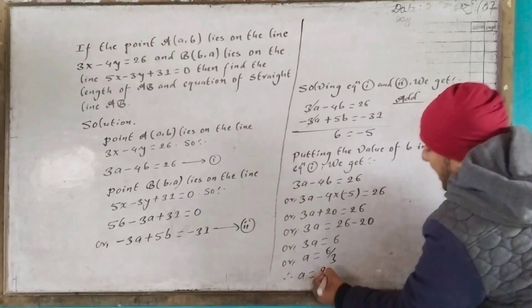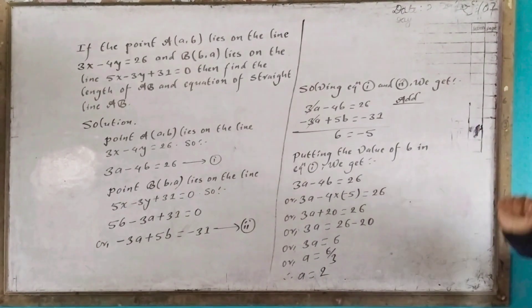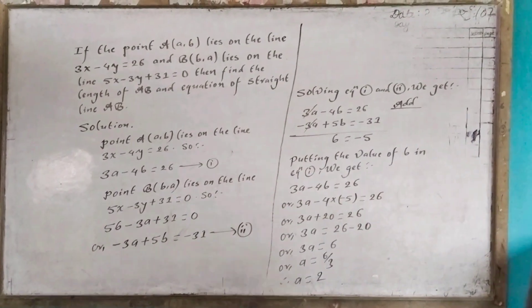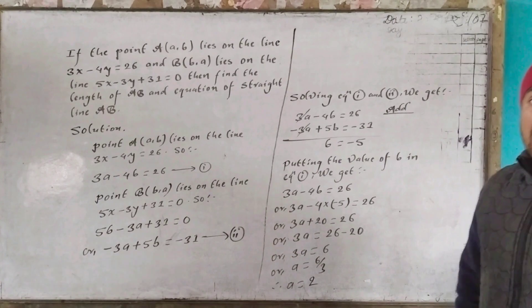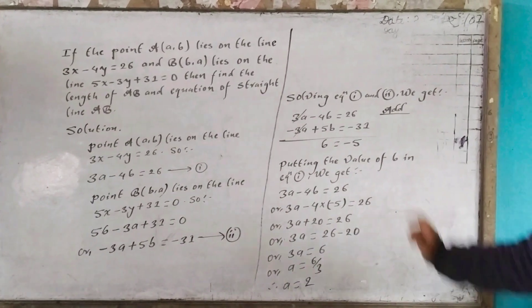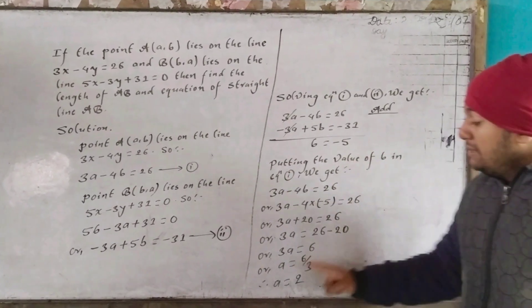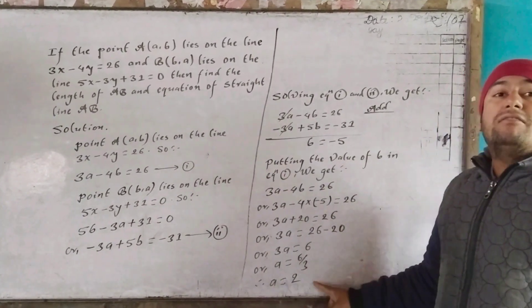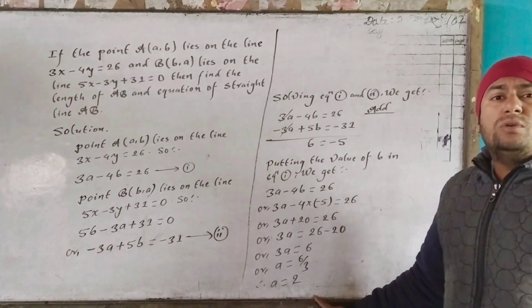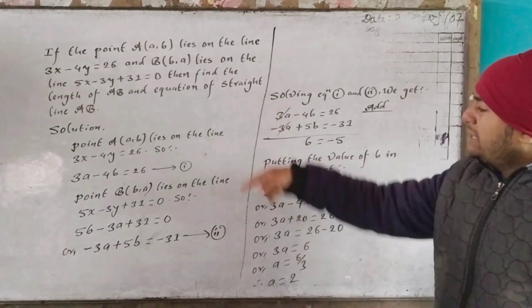Therefore the value of A is 2. So A equals 2 and B equals minus 5. These are the coordinates of the points.